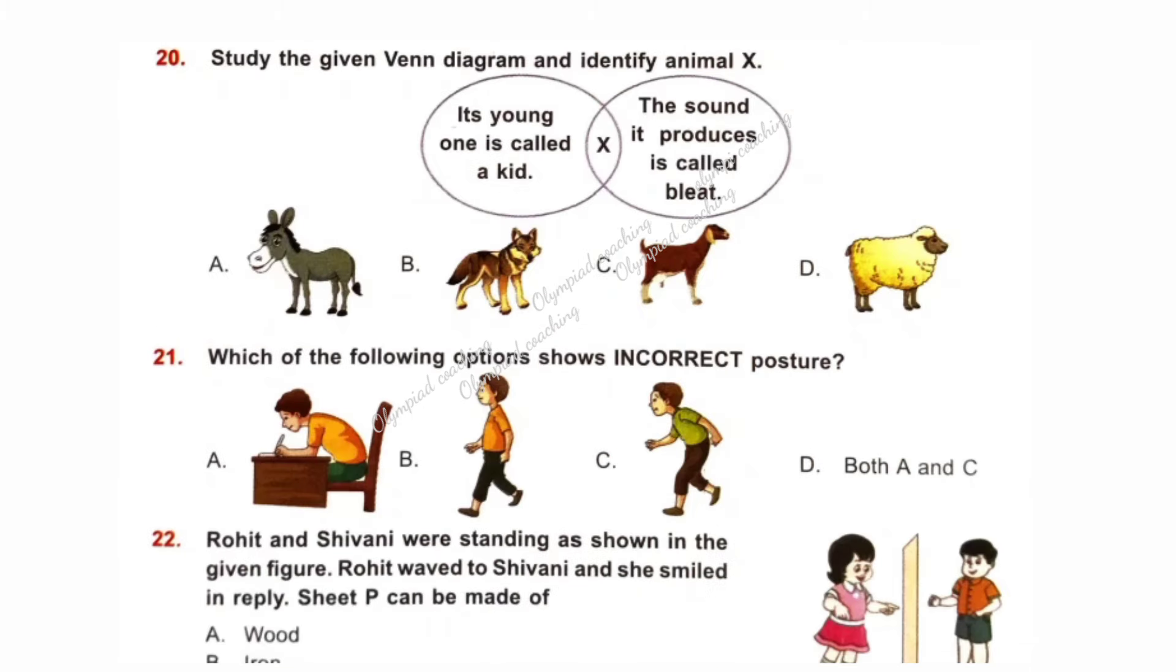Question number 20. Study the given Venn diagram and identify animal X. Circle 1: Its young one is called kid. Circle 2: The sound it produces is called bleat. Clearly, X is an animal whose sound is called bleat and its young one is called kid. Young one of goat is kid and its sound is bleat. So, option C is correct. Young one of donkey is foal. Young one of fox is cub. And young one of sheep is lamb. Donkey sound is bray. Fox, yelp. And sound of sheep, bleat.